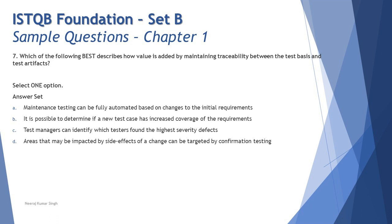Option B: 'It is possible to determine if a new test case has increased coverage of the requirement.' This is related to traceability. For example, if a requirement has three test cases at 50% coverage and I add two more, the traceability to the requirement tells me whether coverage increased to 60% or 70%. That can only be measured if you have traceability between tests and requirements. Option C — identifying which testers found the highest severity defects — has no relationship with traceability.